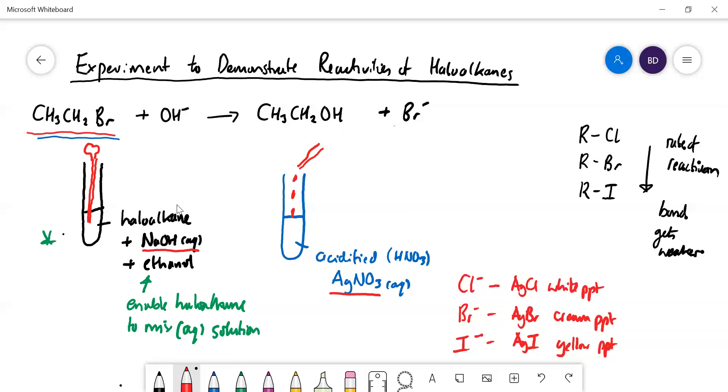Now why do we need to acidify it? Because don't forget in this tube we've got NaOH and that needs to be neutralized, otherwise that's going to form a precipitate with silver - silver hydroxide. That's why you add nitric acid to get rid of that. Now if you have released any halide ion, then that is going to react with the Ag+ ions to form a precipitate.